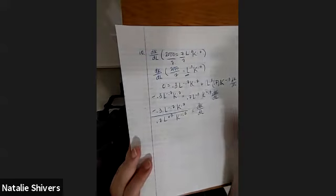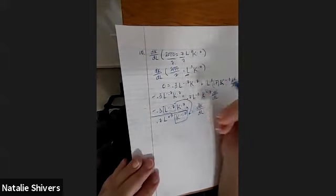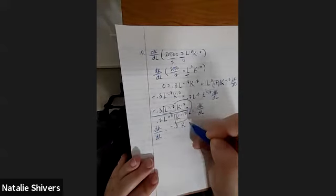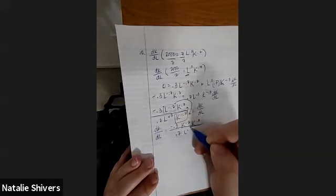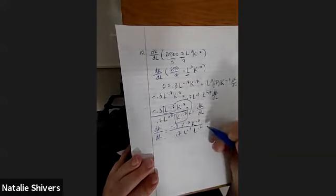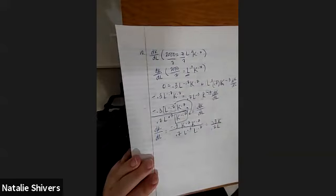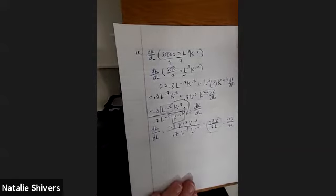The two negative signs mean we flip the exponents: k^0.7 moves up and k^(−0.3) moves down, combining to k^1; similarly l^(−0.7) moves down and l^0.3 moves up, combining to l^1. So dk/dl = (−0.3·k) / (0.7·l). You can leave it like this, or simplify by multiplying top and bottom by 10 to get dk/dl = −3k / (7l).